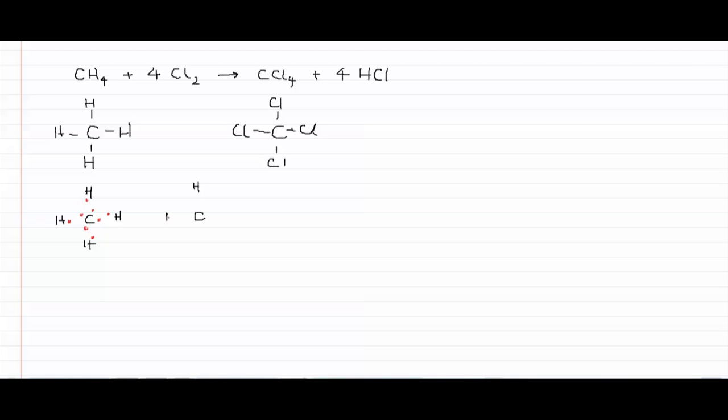We then imagine that these electrons are distributed ionically. If you remember from chapter three, ionic bonds, the electrons are transferred entirely to the most electronegative element. In this case, carbon is more electronegative than hydrogen. So if we were to distribute the valence electrons ionically, they would all associate with the carbon and not with the hydrogen.